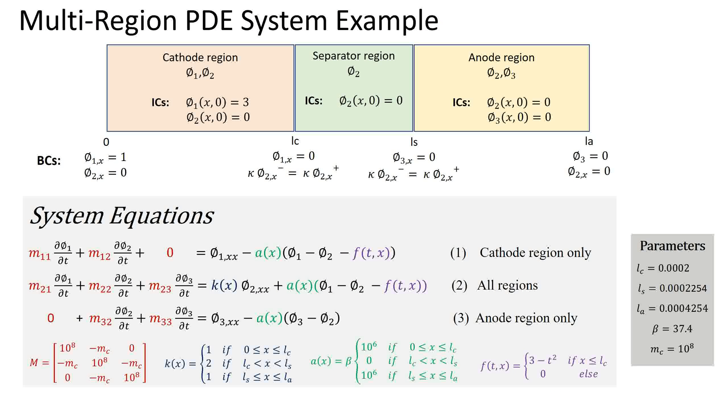Our second example is derived from a simplistic battery model. It has three equations. Equation one corresponds to the system variable phi1 and is defined in the cathode region between 0 and LC. Equation two corresponds to the system variable phi2 and is defined in all three regions. Equation three corresponds to the system variable phi3 and is defined in the anode region to the right only.